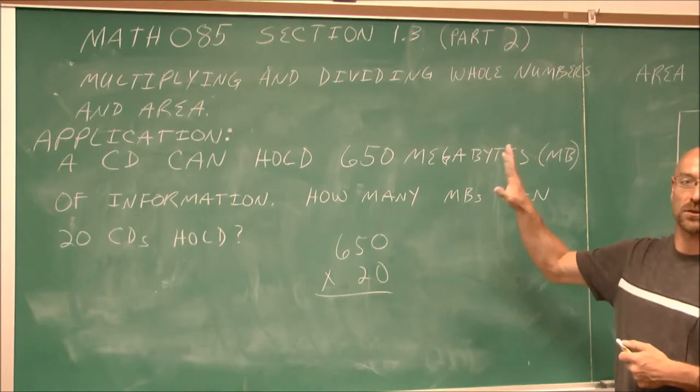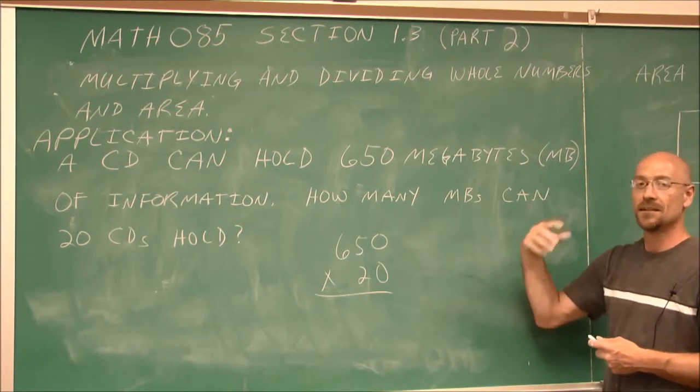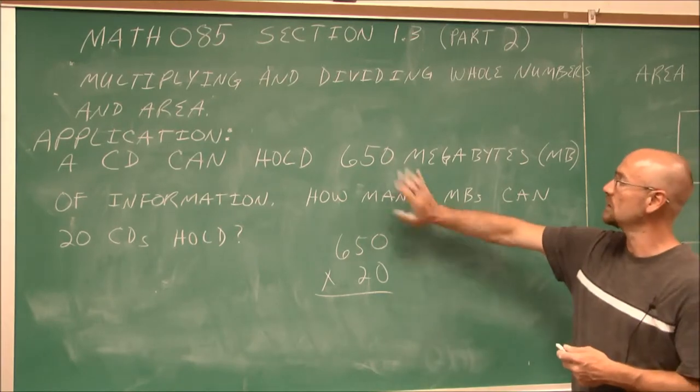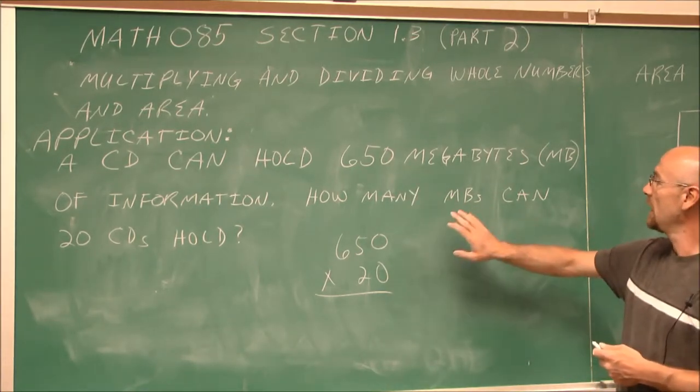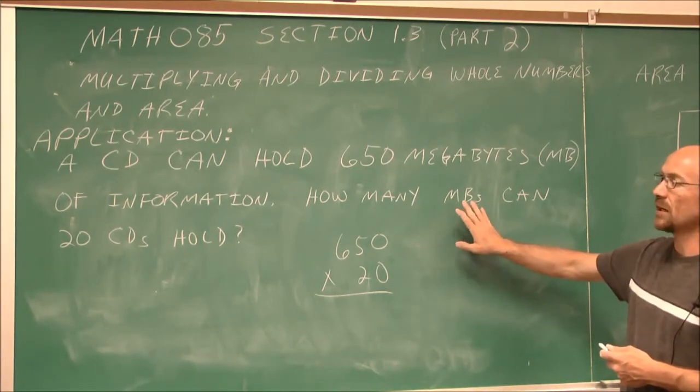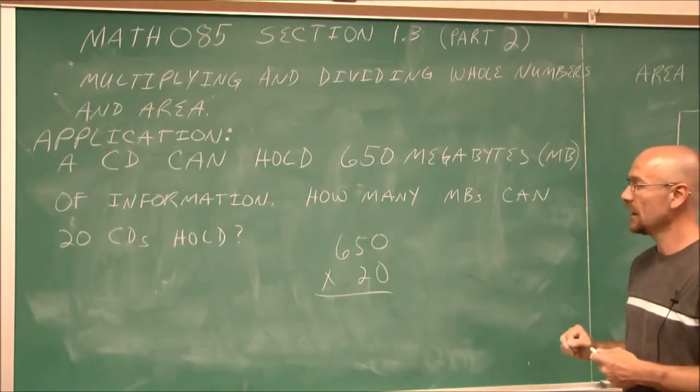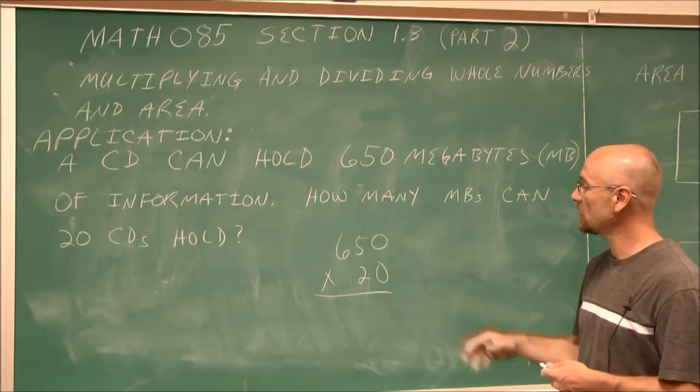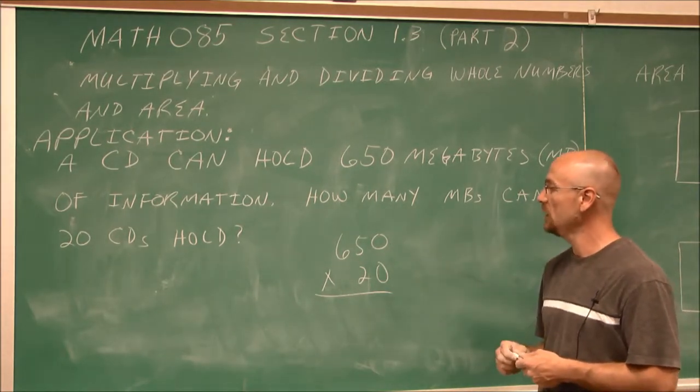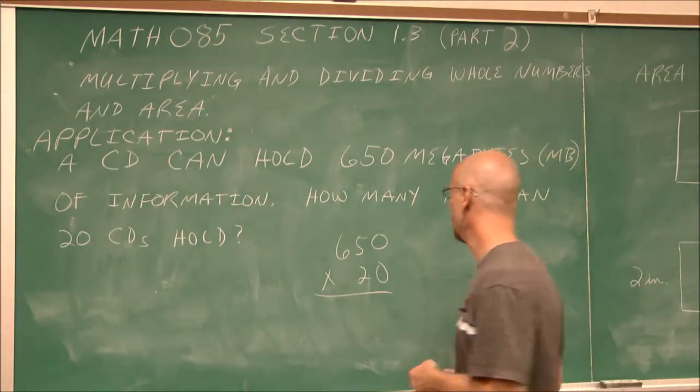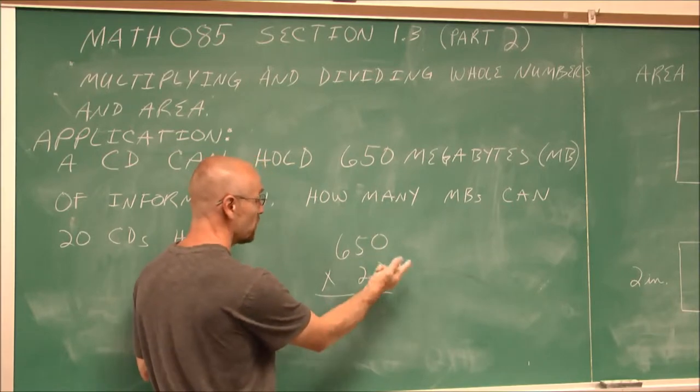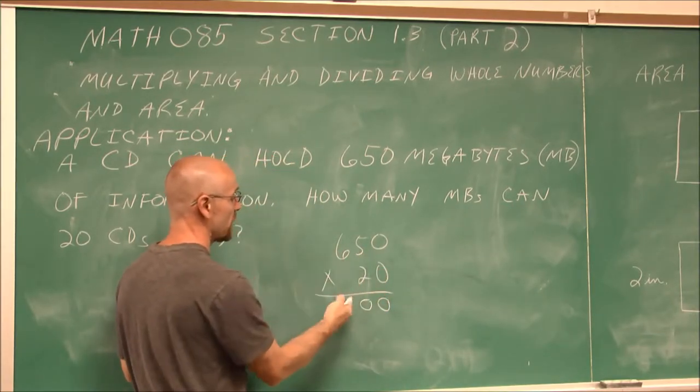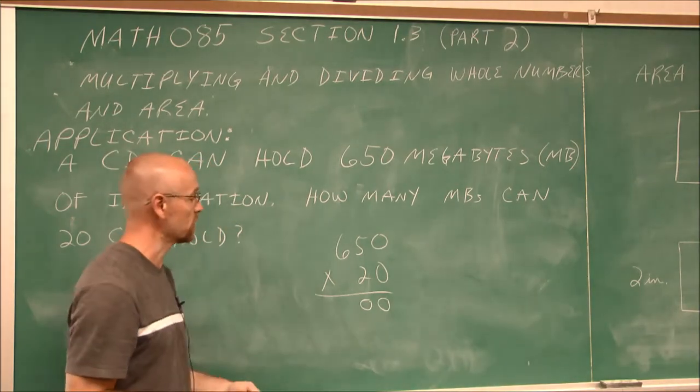This is how I would interpret this problem. And when it comes to any story problem, make sure you read it, read it, read it before you even begin. Read it at least three times. A CD can hold 650 megabytes, and I want to know how many megabytes 20 of them can hold. So we realize we're going to multiply, so I'm going to do 650 times 20. If I do this vertically, I'd have 0 times 0, which is 0. And 0 times this is 0. And 0 times that is 0. We'd have lots of 0's here.